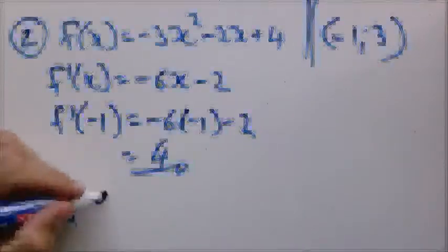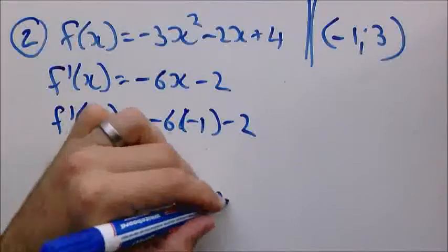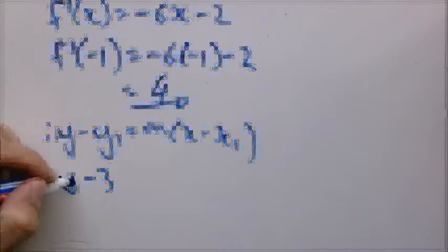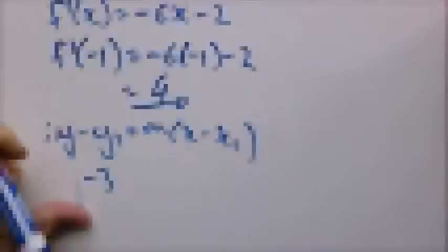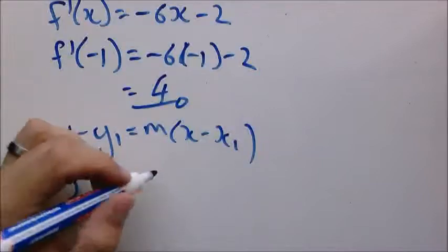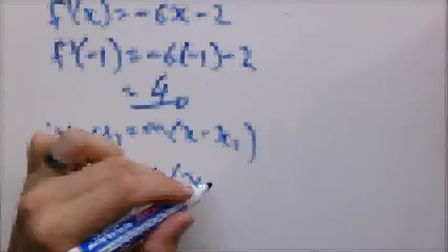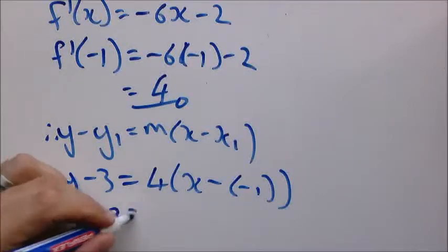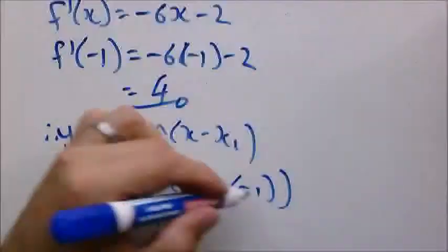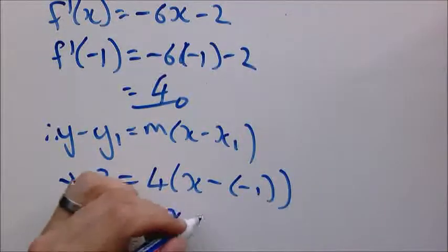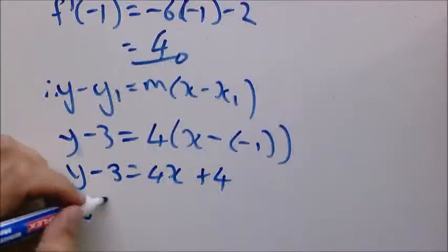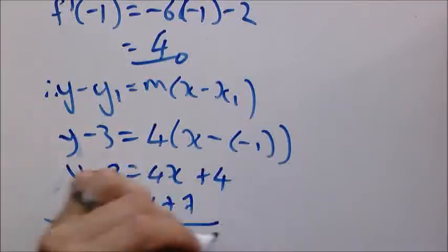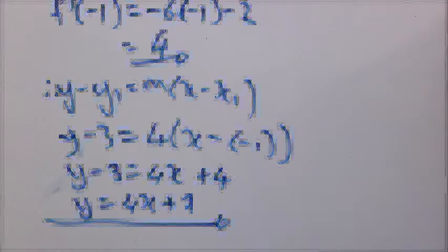So now in this nice equation we just substitute what we have. So Y minus 3 equals 4 times X minus negative 1 in the member of brackets. So Y minus 3 equals 4X. That's a plus 1, it becomes a plus 4. So Y equals 4X plus 7. And that's how easy it is to do these calculations. Let's look at the next one.